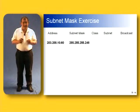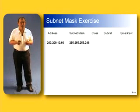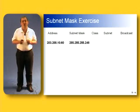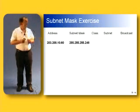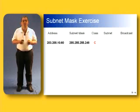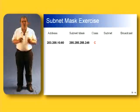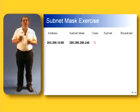Here's a subnet mask exercise. We have an address of 203.200.10.60 with a subnet mask of 255.255.255.248. We need to determine what class address it is, what the subnet portion of the address is, and what the broadcast address is. Looking at the first octet, 203 falls in the range 192 to 223, so this is a class C address. The first three octets will form part of the subnet address: 203.200.10.something — it's only that last octet we need to examine.